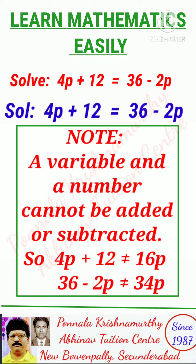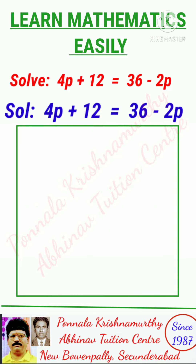Solve 4p plus 12 is equal to 36 minus 2p. Solution: 4p plus 12 is equal to 36 minus 2p.